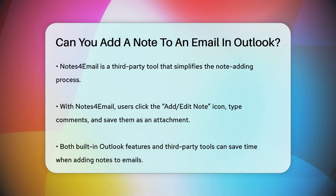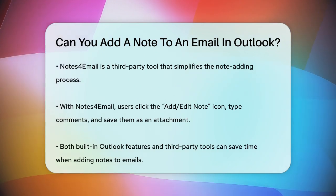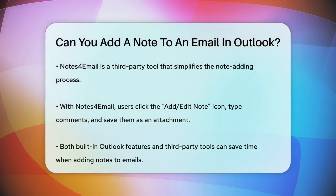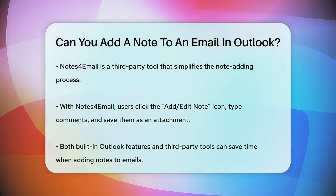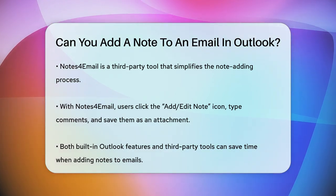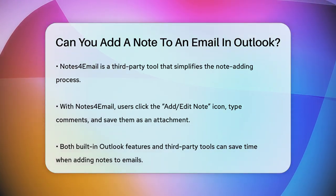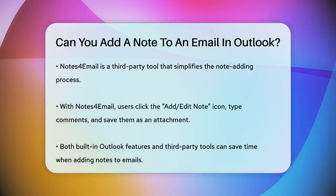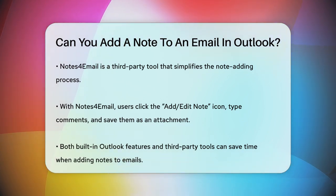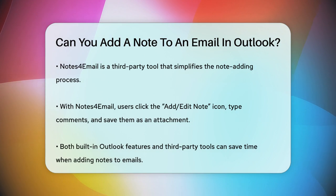There's also a third-party tool called Notes for Email that simplifies this process. With this tool, you can add a note to an email by clicking the Add Edit Note icon on the ribbon, typing your comments, and saving it. The note will be added as an attachment, making it easy to find later using Outlook's search features.